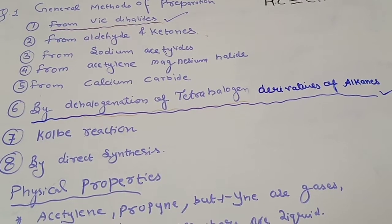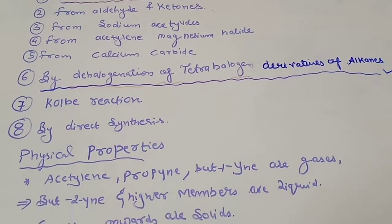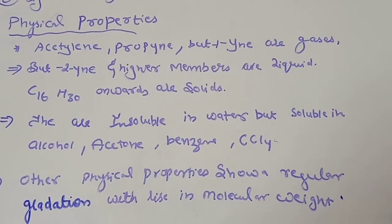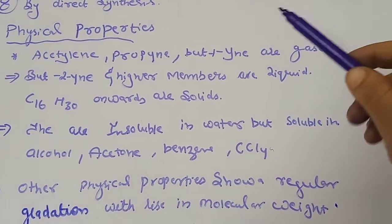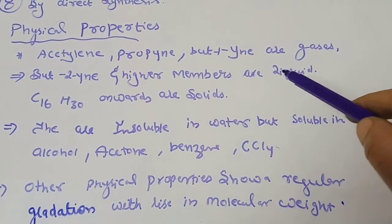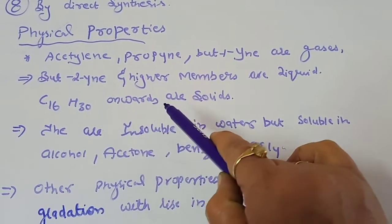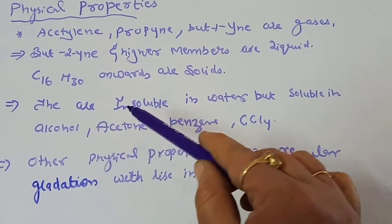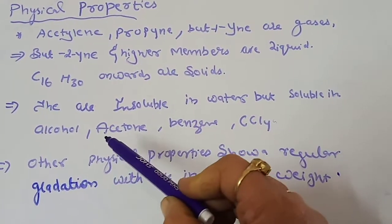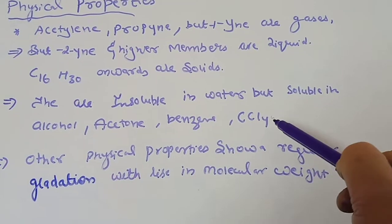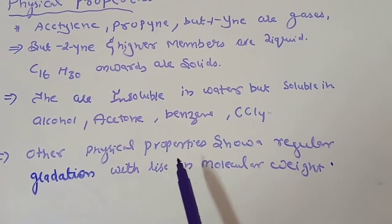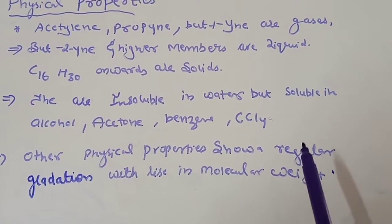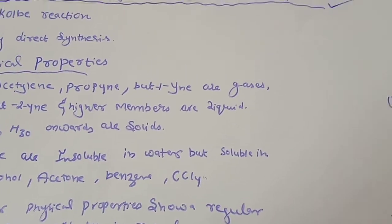We will discuss only the first one and the sixth one as per your syllabus. For physical properties: acetylene, propyne, and but-1-yne are gases; butyne and other higher members are liquids; and C16H30 onwards are solids. Alkynes are generally insoluble in water but soluble in alcohol, acetone, benzene, and carbon tetrachloride. Other physical properties show a regular gradation with rise in molecular weight.